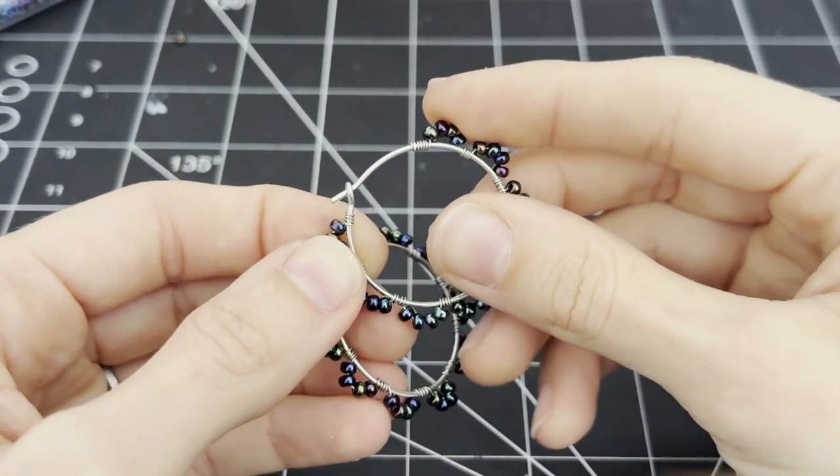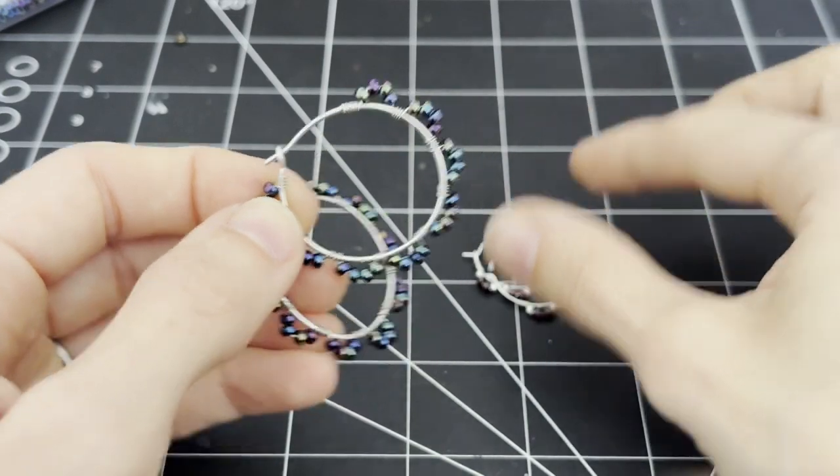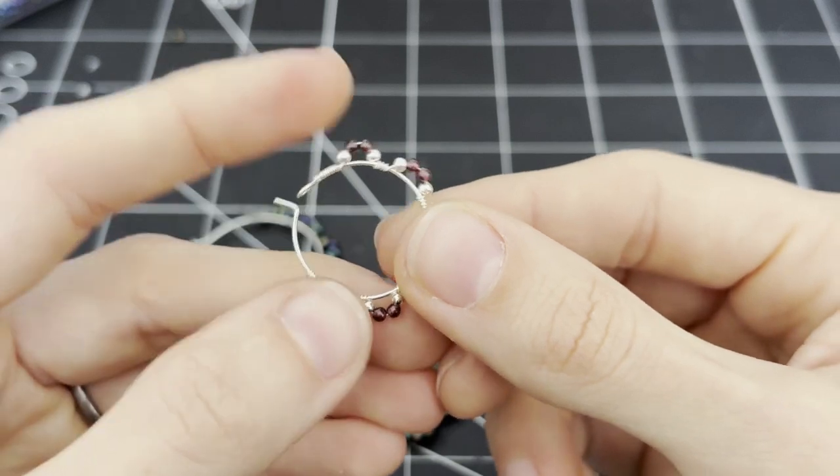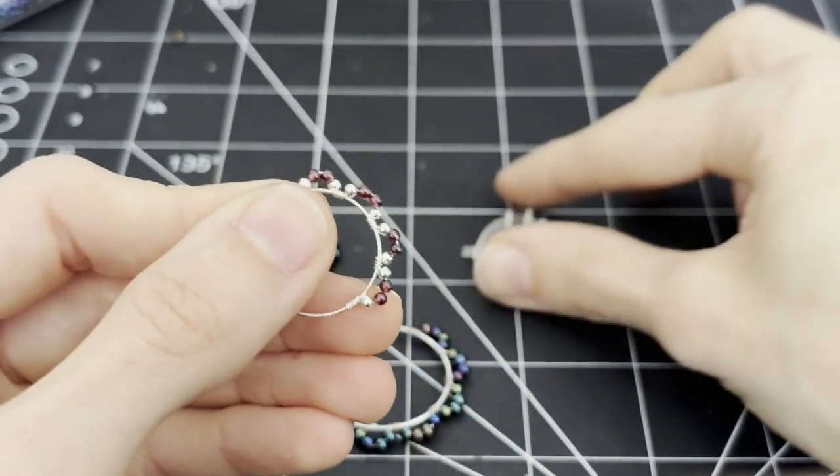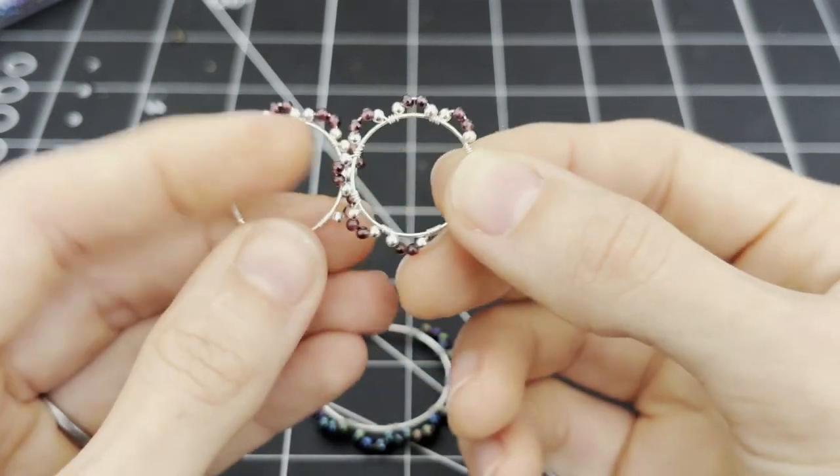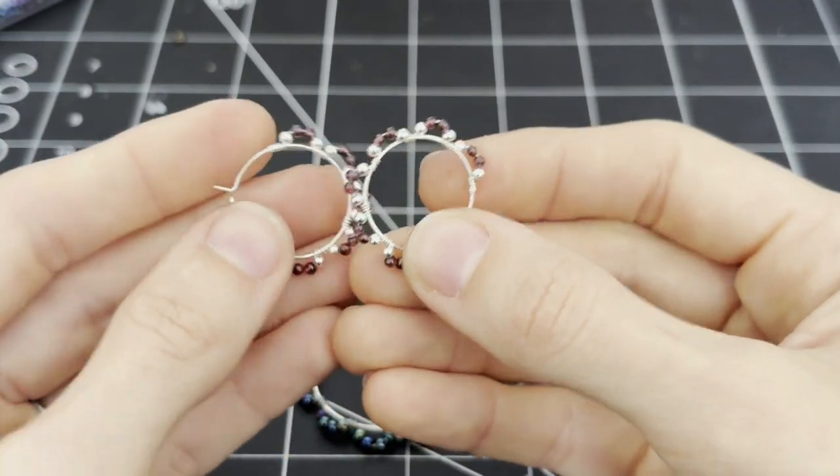You can buy a pre-made hoop if you want. Like these ones are silver and they're pre-made and they're stamped. That's why I bought them. See, it's exactly the same thing, it's just they're much thinner and more delicate.